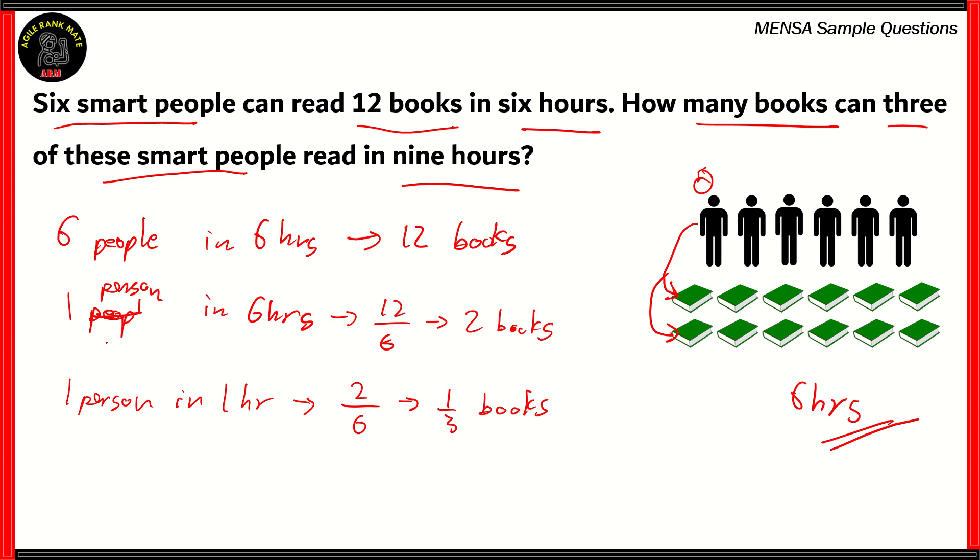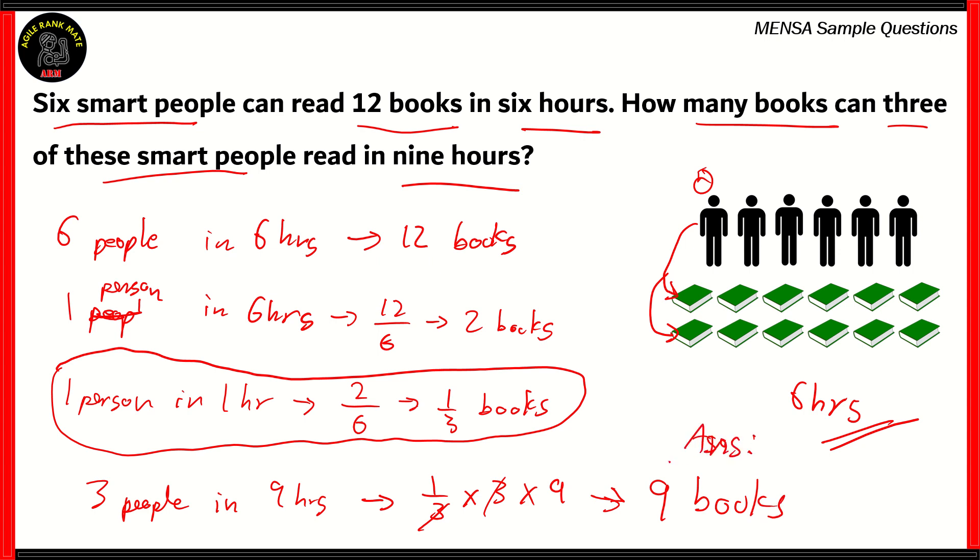Now we can use that rate in order to find out how many books can be read by three people in nine hours. So three people in nine hours. Now we know that the rate of book reading is one by three books by one person per hour. So we're going to multiply that rate with the number of people and the number of hours. So three cancels out with three, and what we have is nine. So the right answer is nine books. Nine books are read by three smart people in nine hours.